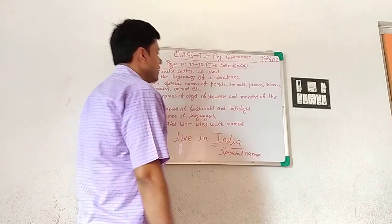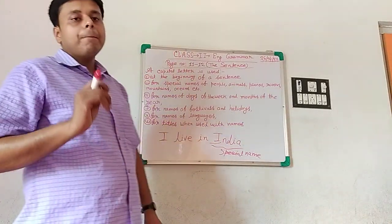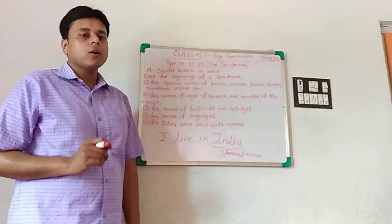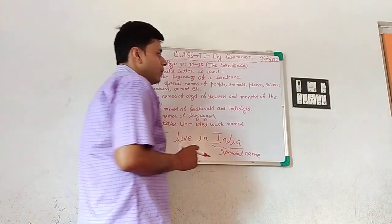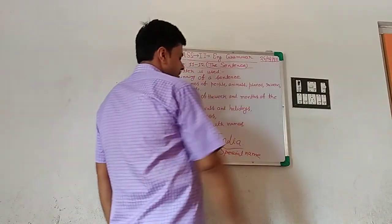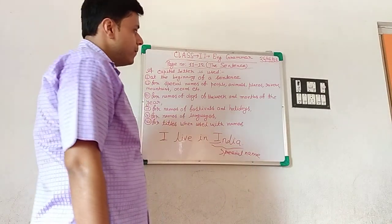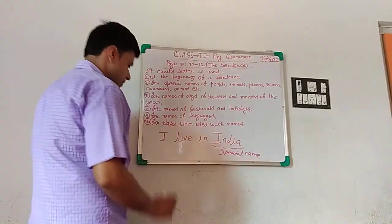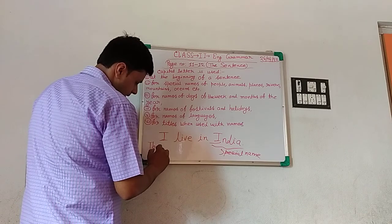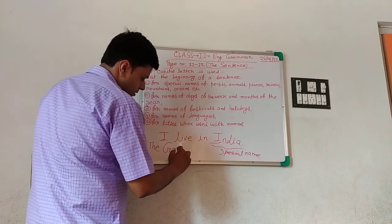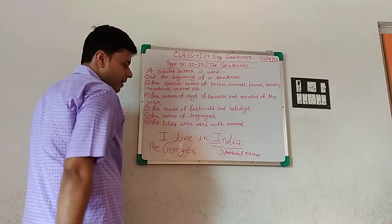Special names include animals — if you have pet animals at home, their name is also a special name. Places are special names. India is the name of a place, so it is a special name. Rivers — for example, if I write 'The Ganges', G-A-N-G-E-S, Ganges is the name of a river, so it is a special name.